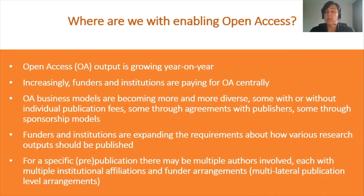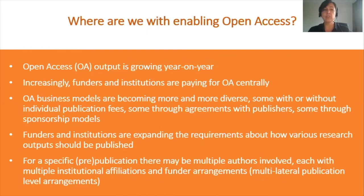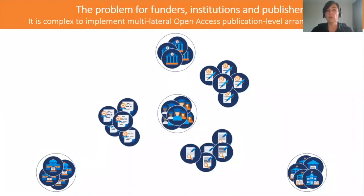Where are we with enabling open access? Open access output is growing year on year — you can view statistics on the OASPA website, which clearly shows the growing trend. Increasingly, funders and institutions are paying for OA centrally. Business models are becoming more complex and diverse — some with or without individual publication fees, some through agreements with publishers, and some through sponsorship models like diamond. The result is a situation where there may be multiple authors involved in a specific publication, each with multiple institutional affiliations and funder arrangements — what we call multilateral publication-level arrangements.